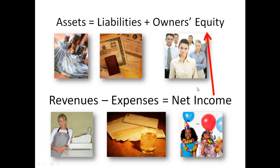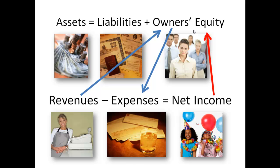Now, net income belongs to the owners. Assets equals liabilities plus owner's equity, and net income will flow to the owners. This could be shown a different way: revenues go to the owners, and expenses come out of the owner's share of the company.